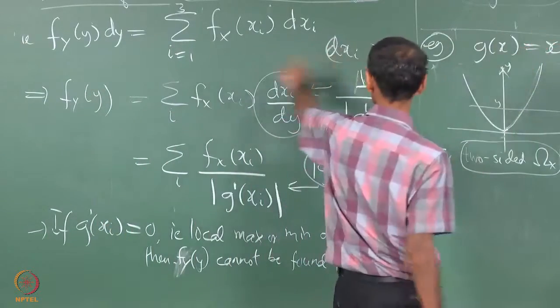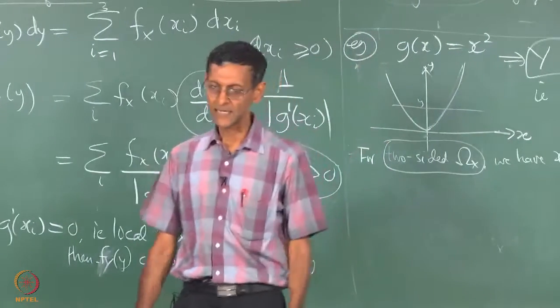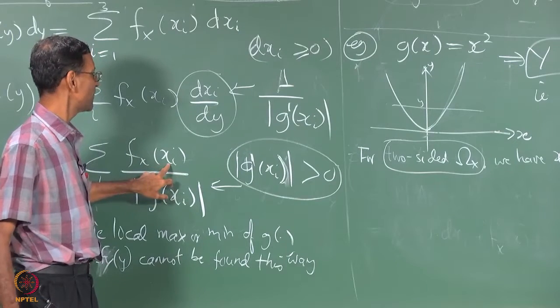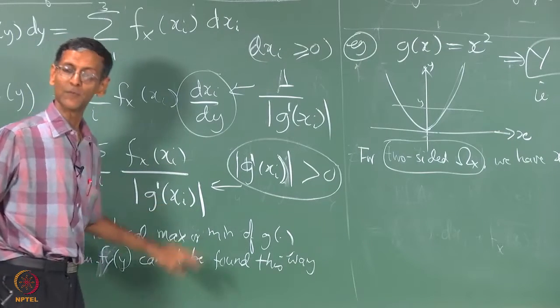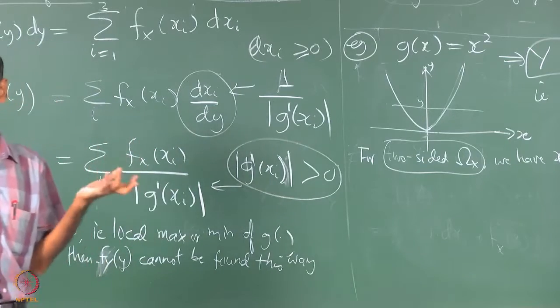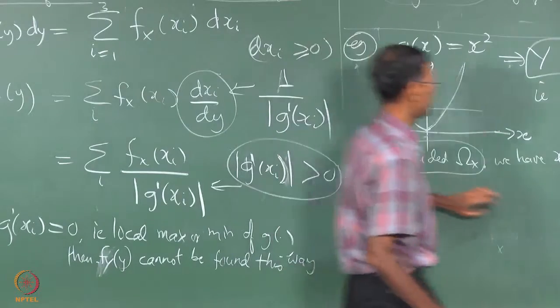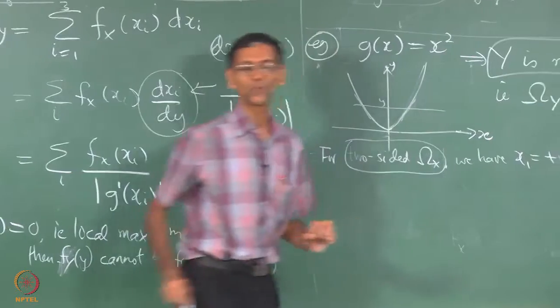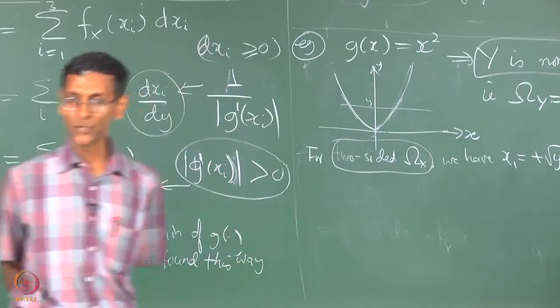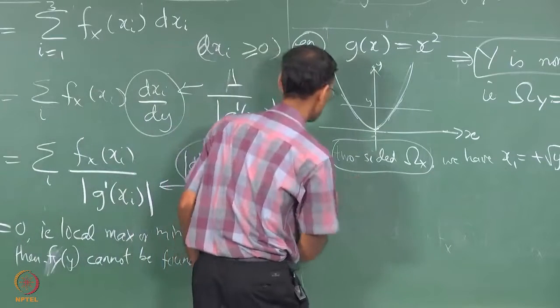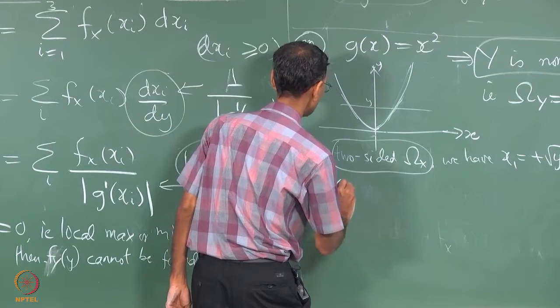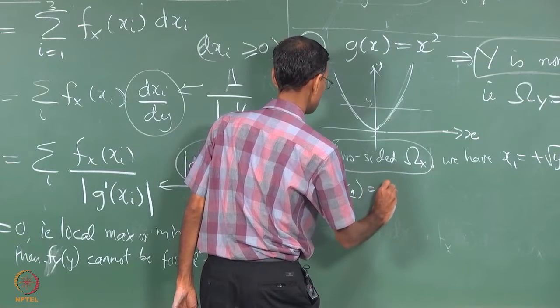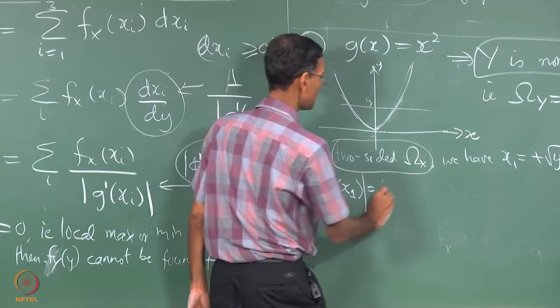So that solves the first part. There are many of these things you can do independently. You can find X_i as a function of y just by knowing g. You can also find g'(X_i) without knowing F_X. So we are interested in the slopes at these 2 points.